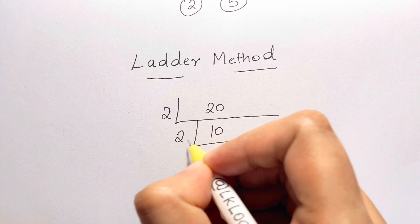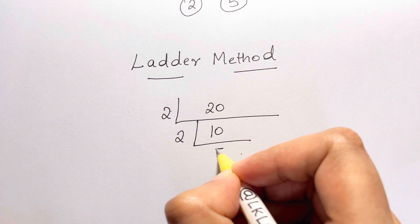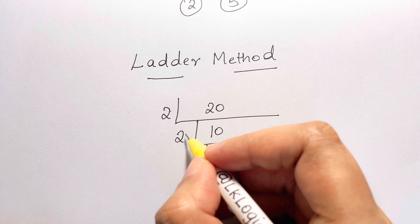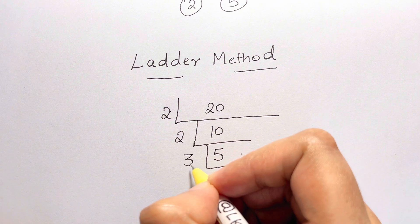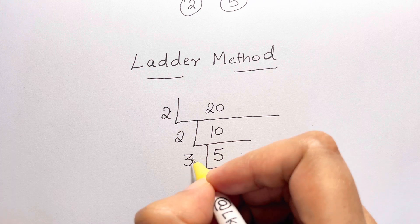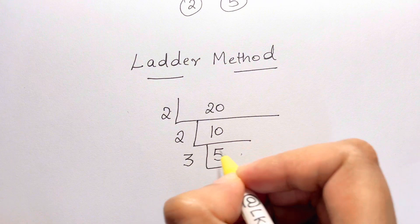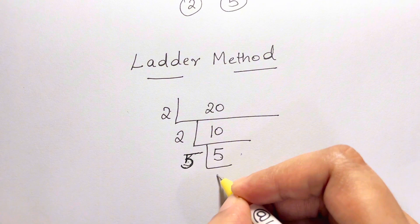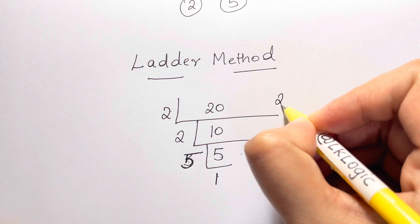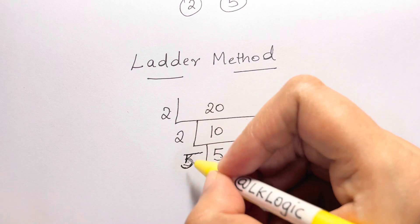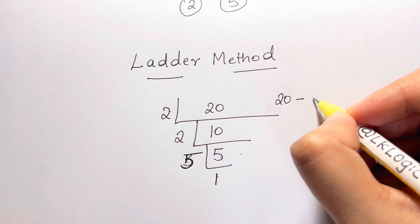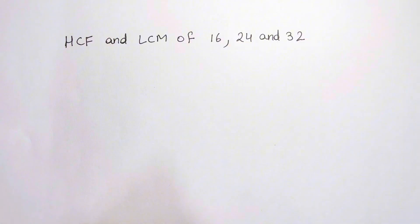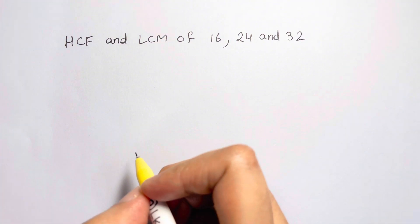Take 2 again: 10 ÷ 2 = 5. Is 5 divisible by 2? No. Is it divisible by 3? No. So take 5: 5 ÷ 5 = 1. Using the ladder method, you can write the product of primes as 2 × 2 × 5, the same result.